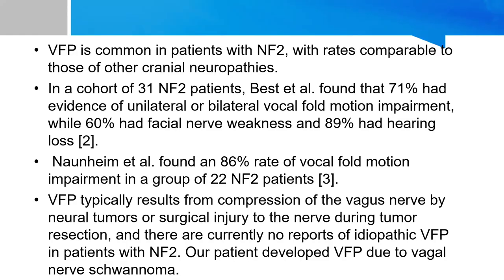Coming to vocal cord palsy, this is actually common in patients with NF2, but is usually found in adults with rates comparable to those of other cranial neuropathies. Previous research by West et al., in a cohort of 31 NF2 patients, found that 71% had evidence of unilateral or bilateral vocal fold motion impairment. Another study found an 86% rate of vocal fold motion impairment in a group of 22 NF2 patients. This typically results from compression of the vagus nerve by neural tumors or surgical injury to the nerve during tumor resection, and there are currently no reports of idiopathic vocal fold palsy in patients with NF2.